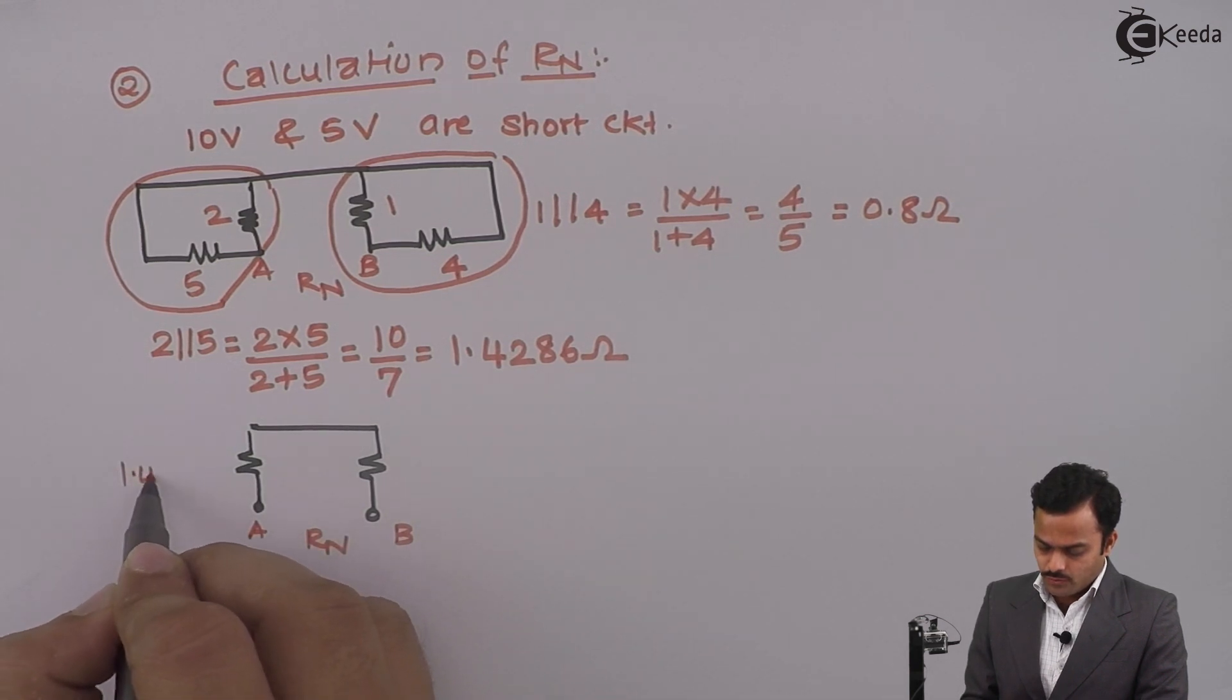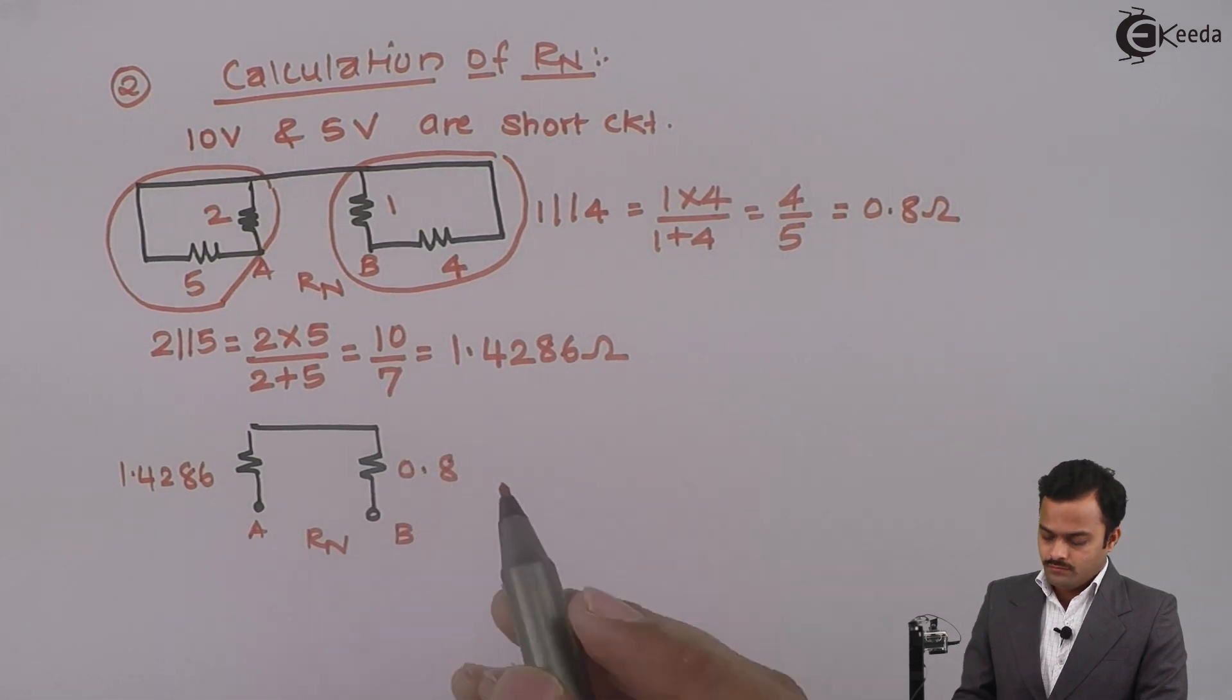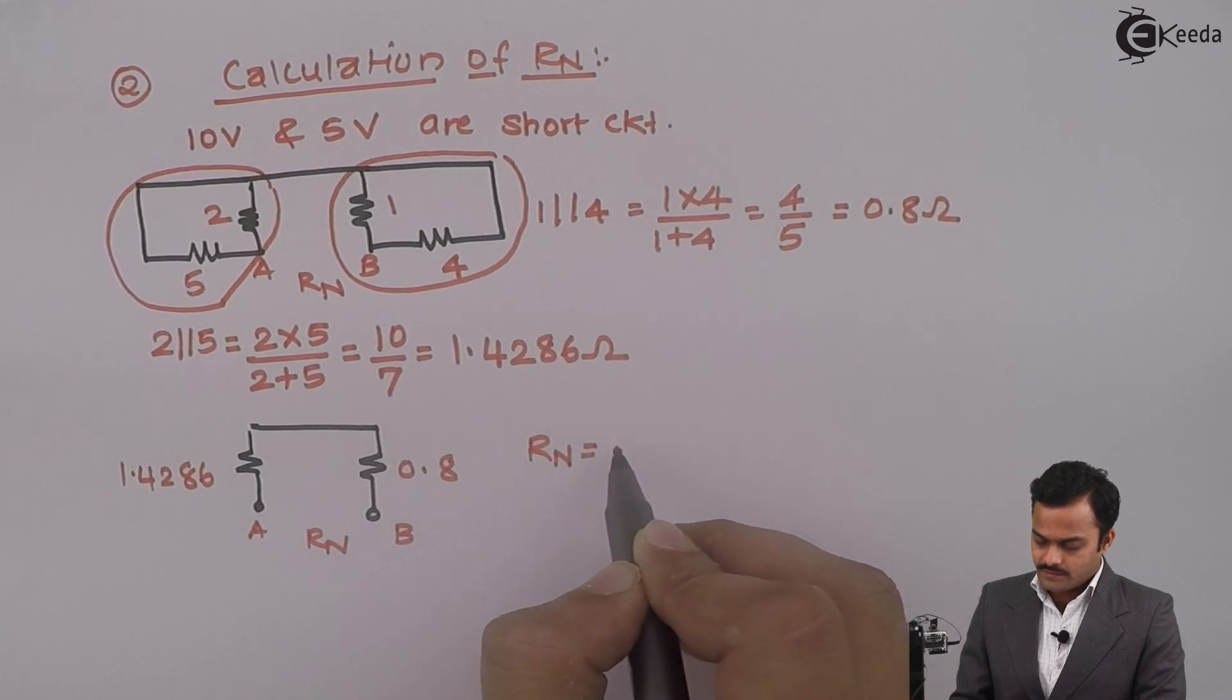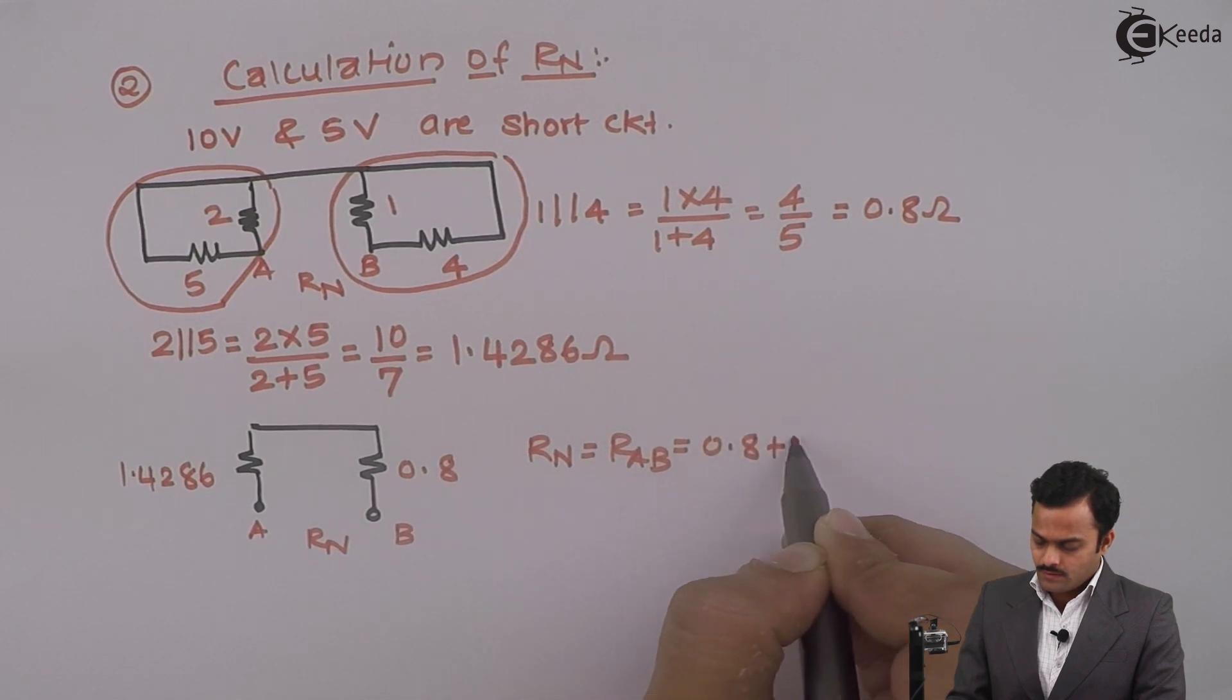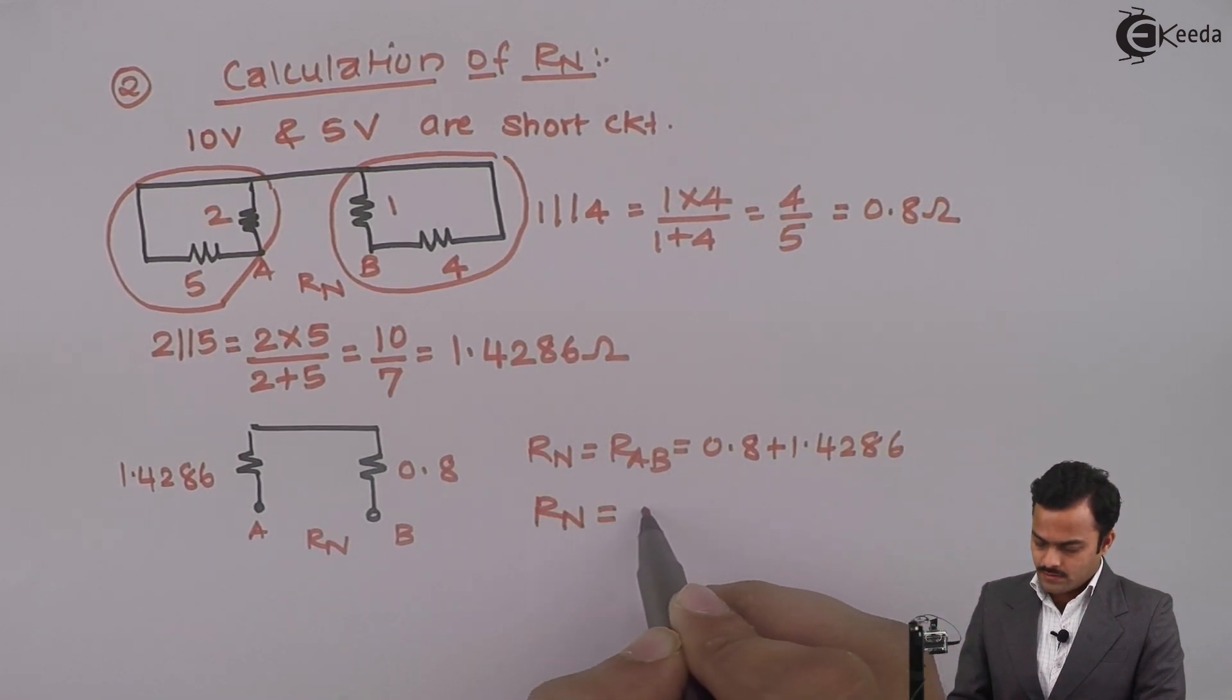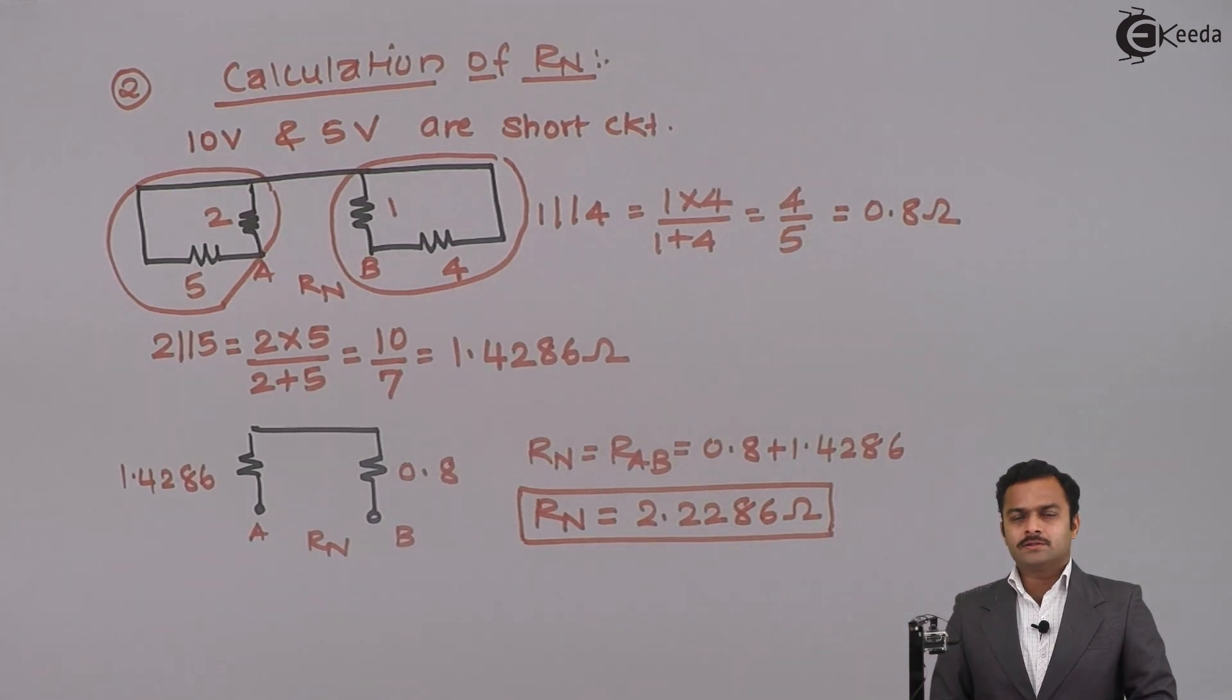So it is 1.4286 and this is 0.8 in series. So I can directly say RN, which is nothing but RAB, is the series combination of 0.8 and 1.4286, which will give you RN as 2.2286 ohms. So second step is also over.